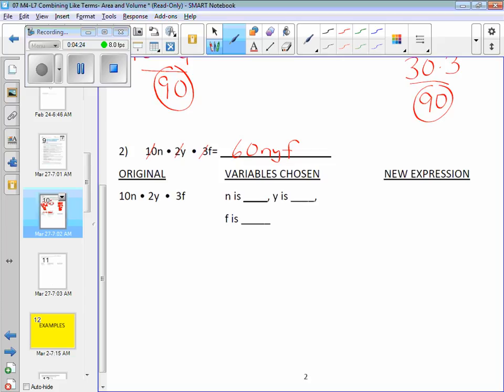Okay, and give me three values to substitute in for n, y, and f. Go for it. 2, 3, 4. Keep it simple. As simple as you can. 2, 3, and 4 will work. Okay, so now I got 10 times the value for n, which is 2, times 2, times the value for y, which is 3, times 3, times the value for f. Should be that.